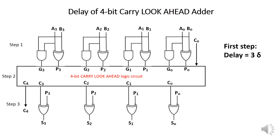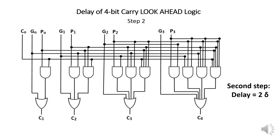Now let's explain how to calculate the delay of a 4-bit Carry Lookahead Adder. The total path is made of three steps. In the first step, the circuit generates G and P: G is generated with a NAND gate and P with an Exclusive OR gate, so the longest delay is 3δ due to the Exclusive OR gate. The second step is a 4-bit carry lookahead logic, which is made of two levels, so the delay is 2δ.